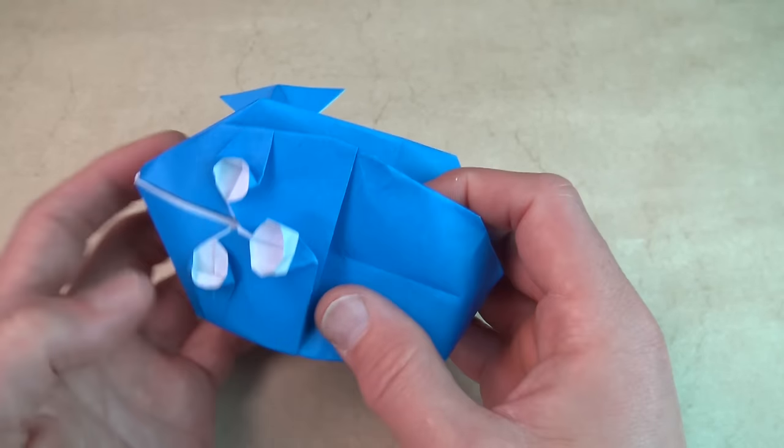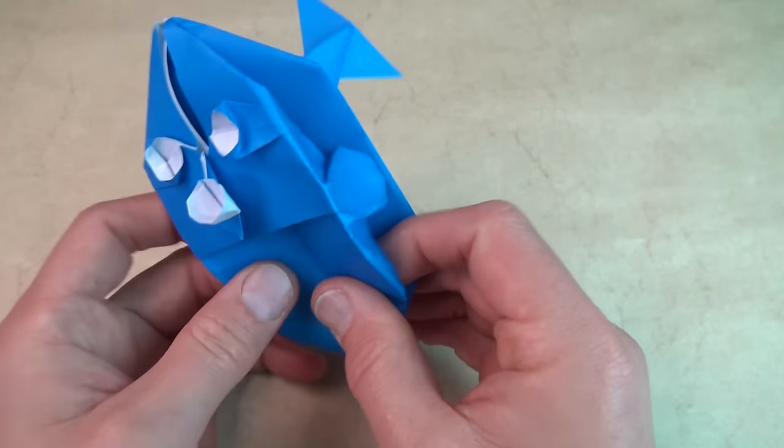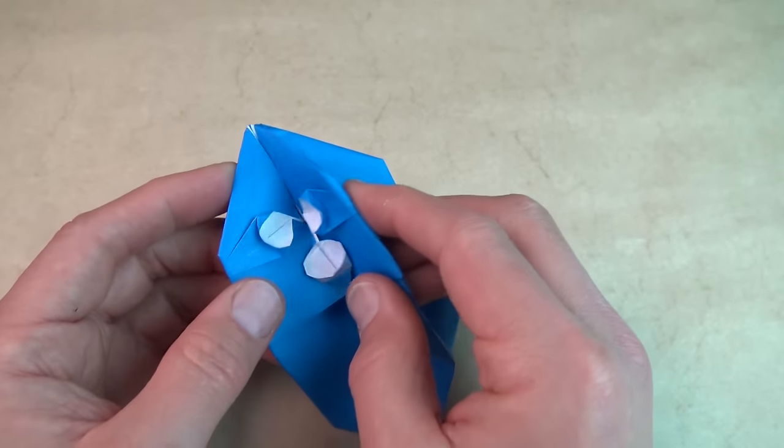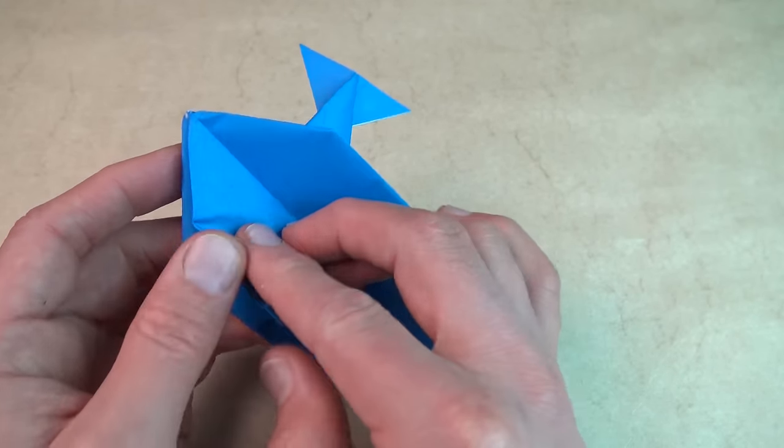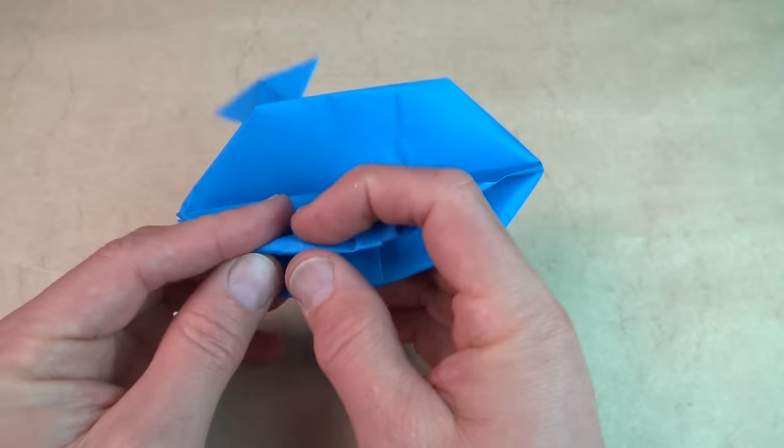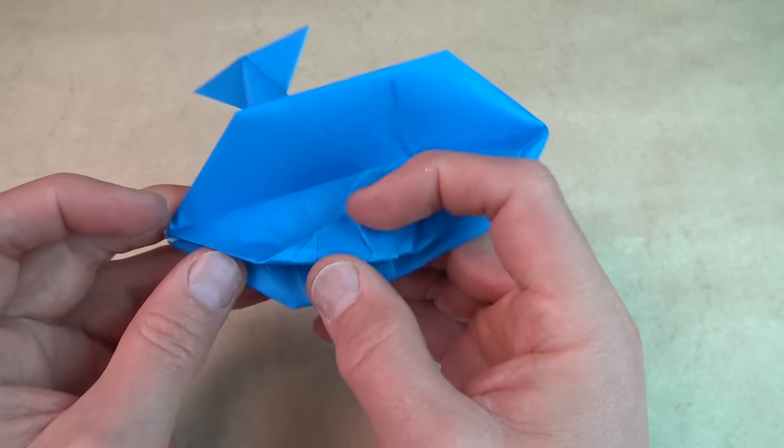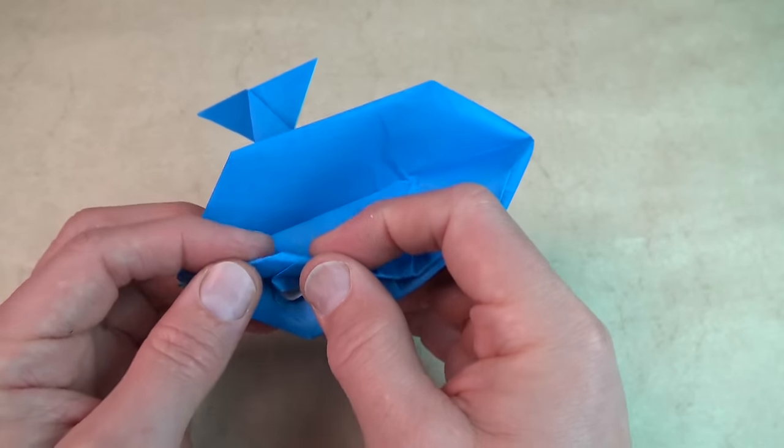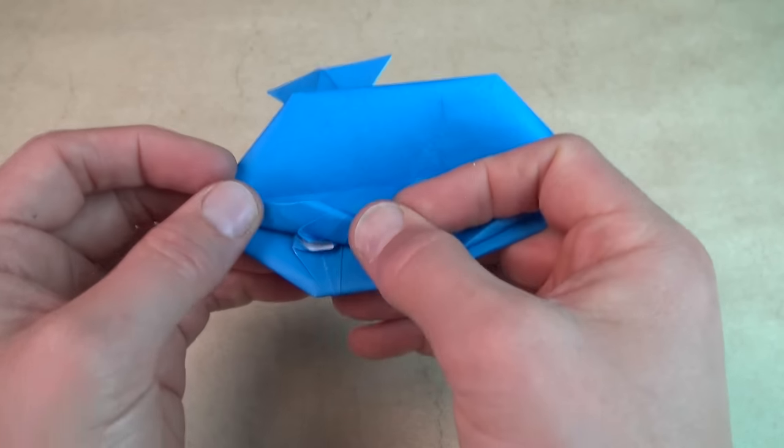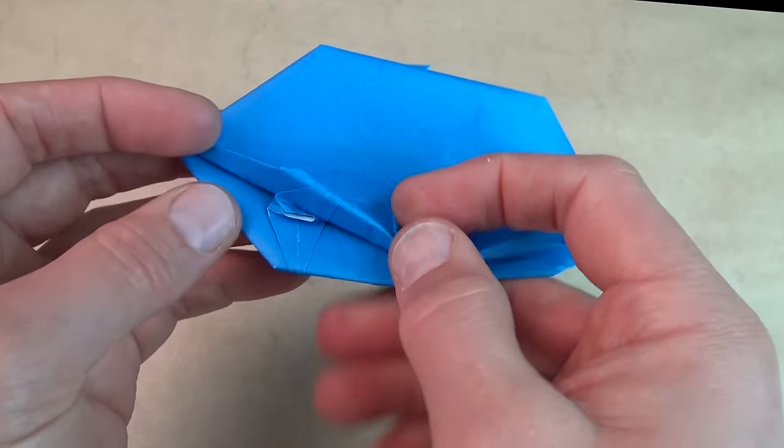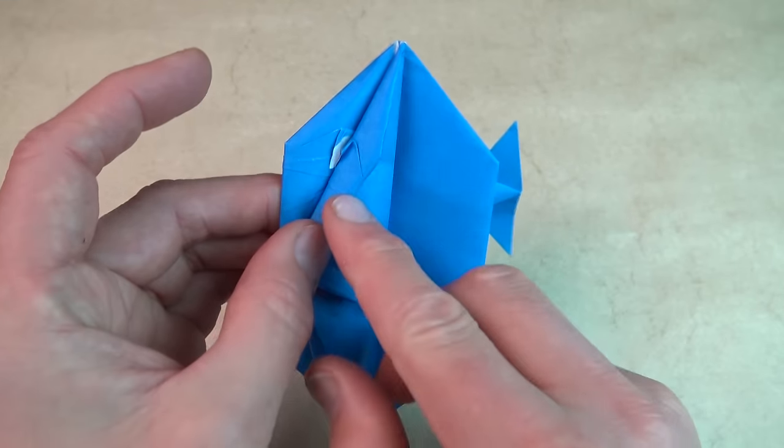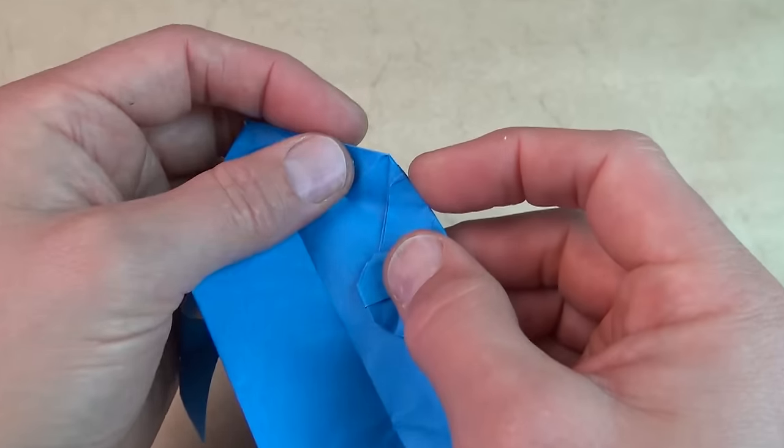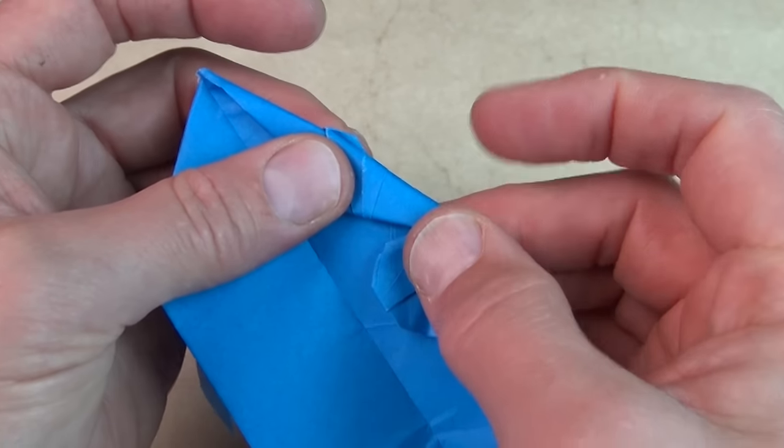And now you're going to bring these together. Like this. And fold between this point and this point. Just loosely. Like that. Okay. So it's like this. And now repeat on this side. So fold this flap up like this.